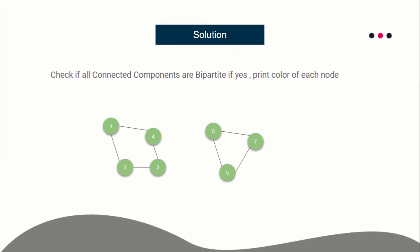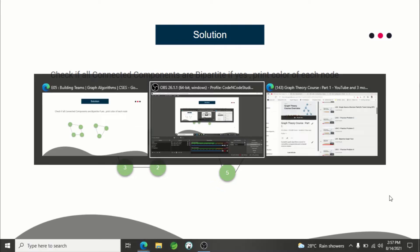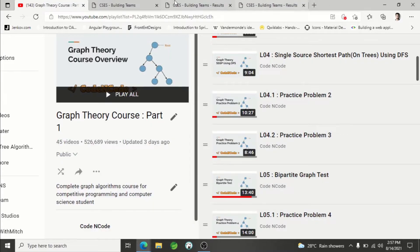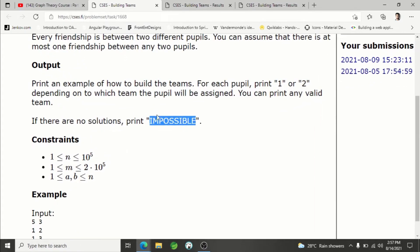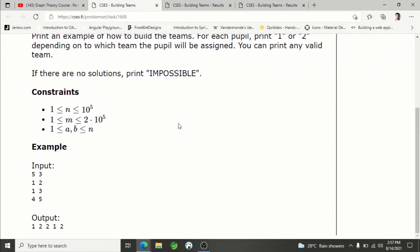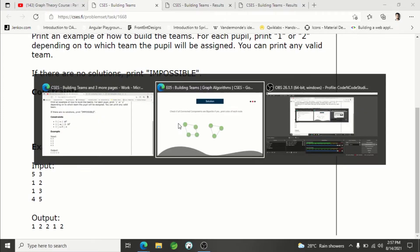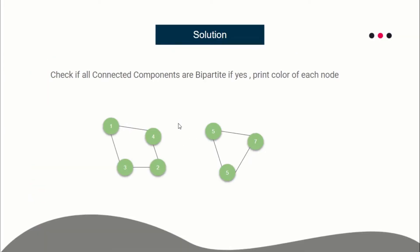If any of a single connected component, if you find even a single connected component which is not bipartite, you have to print impossible. You can find the problem statement here. You have to print impossible if it is not possible to divide the whole students into two different parts.